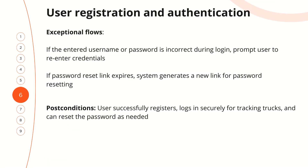The next items in our framework are exception flow and post condition. Exception flow: if the entered username or password is incorrect during login, the system prompts the user to re-enter credentials. If a password reset link expires, the system generates a new link for password resetting. Post condition: users successfully register and log in securely for track tracking and can reset the password as needed.